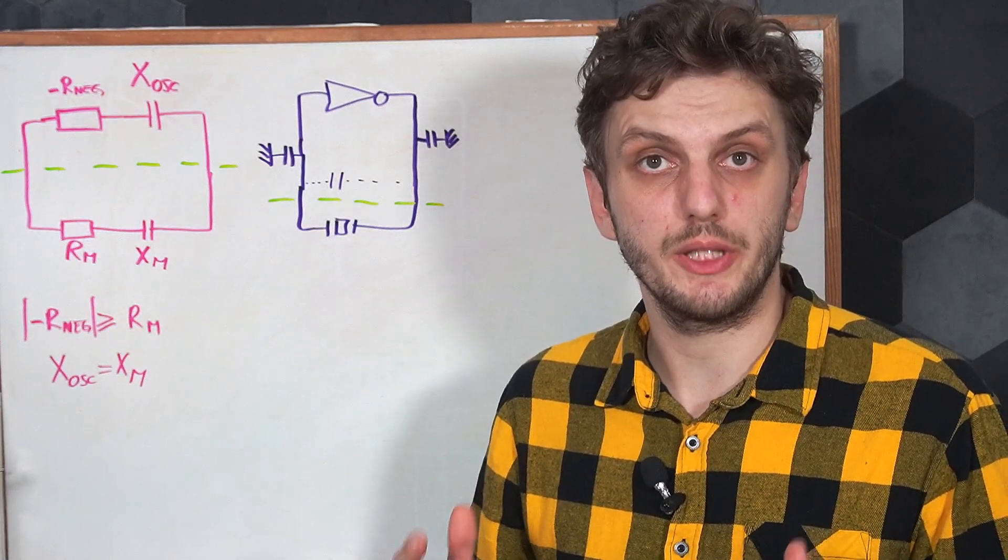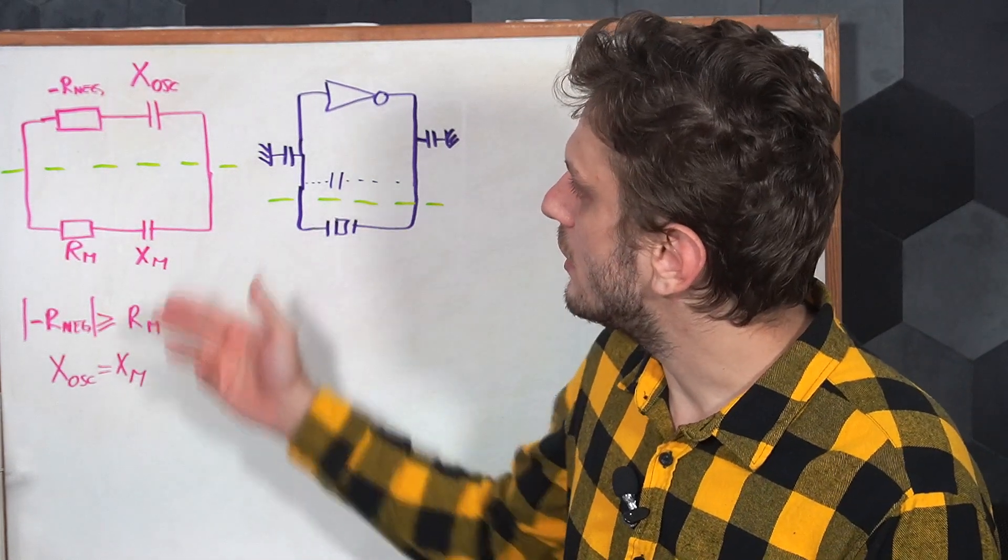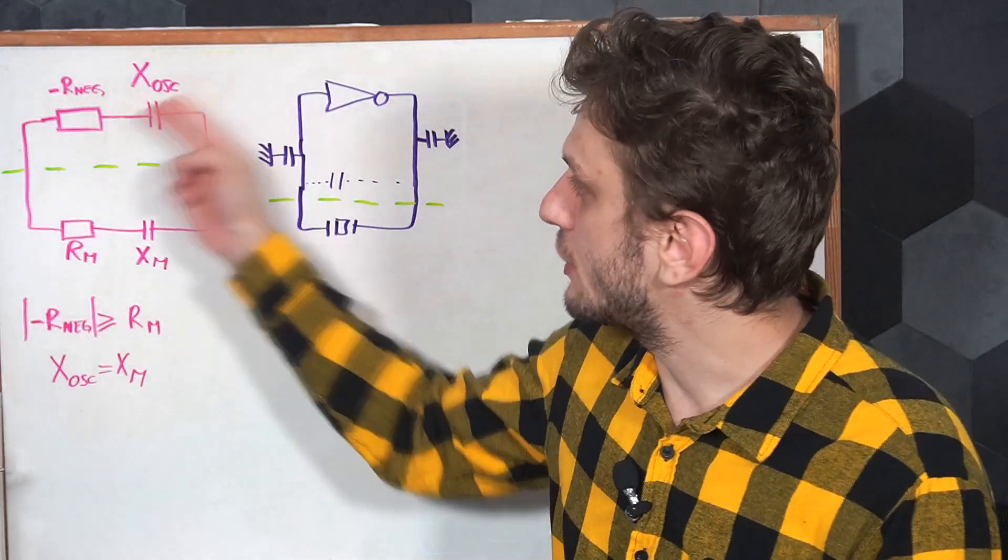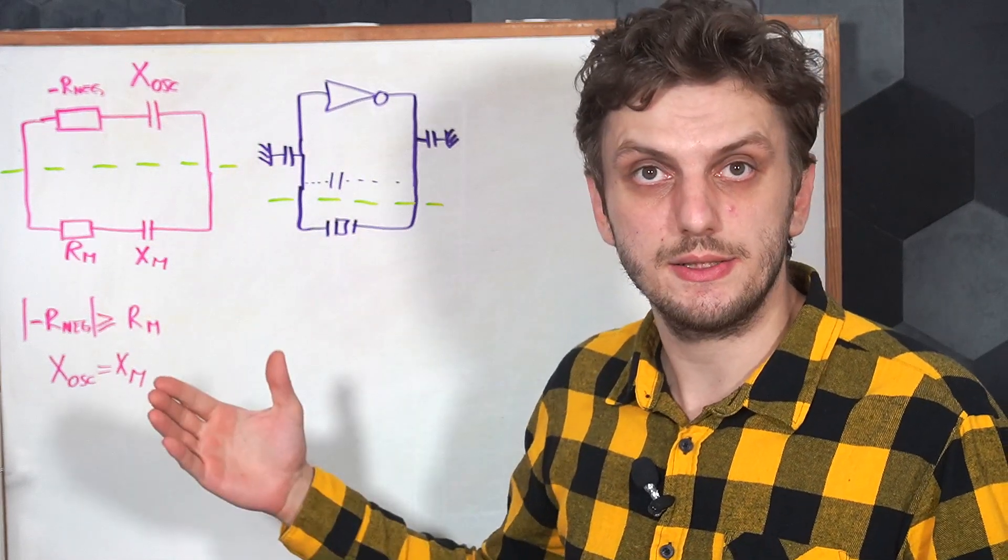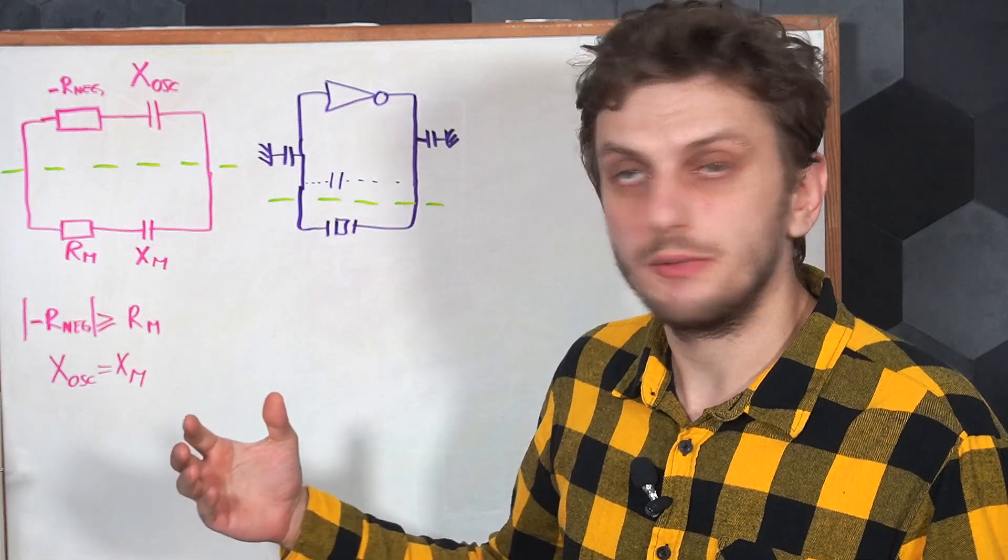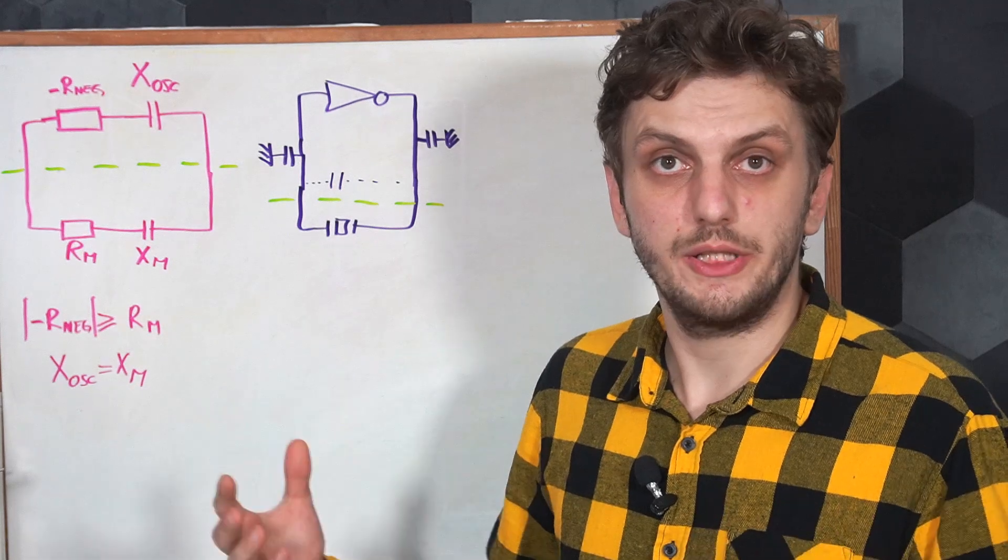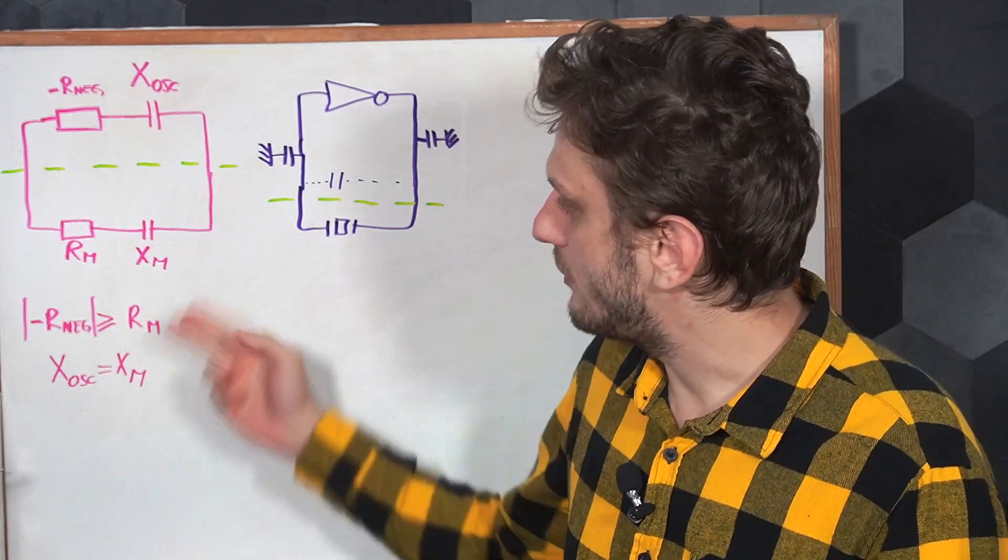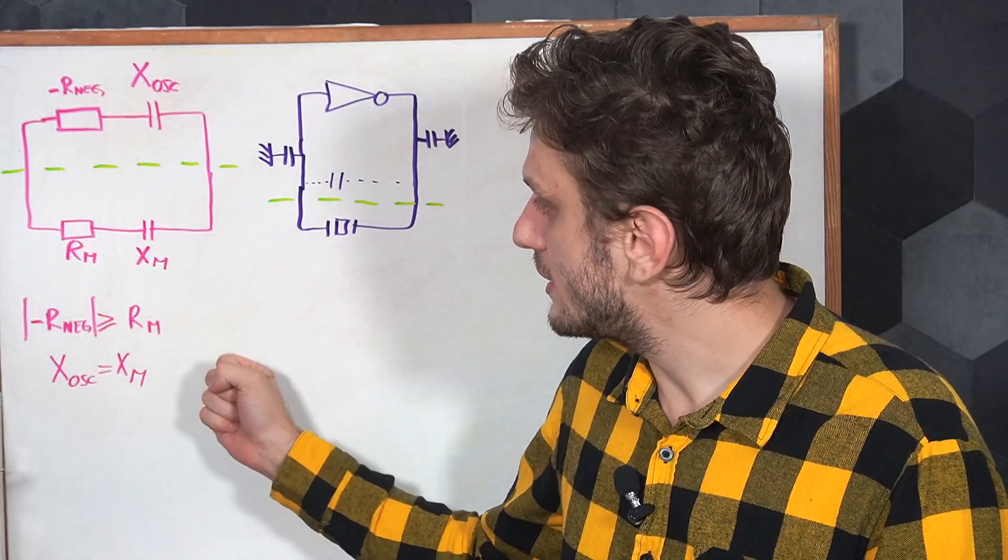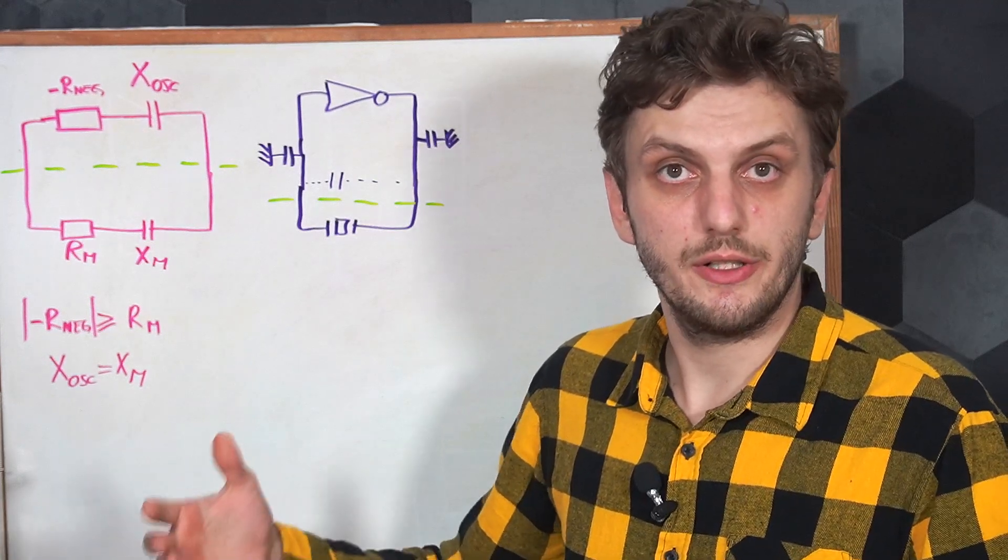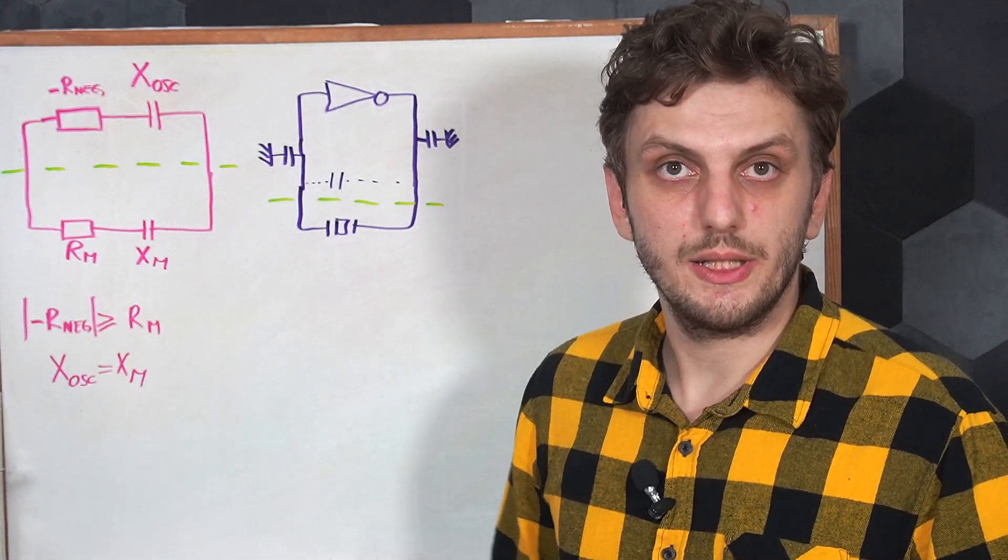So another way of looking at the crystal oscillator is using the negative resistance model. So in this model, the active part of the circuit, the amplifier, is represented by a negative resistance, and we also have an oscillator reactance, and the crystal is represented by the motional resistance and the motional reactance. And the criteria needed to get this thing to oscillate is to have the negative resistance's absolute value equal to the motional resistance, and of course we want it to be a bit larger so that it can get into that steady state, and the reactances need to be equal.